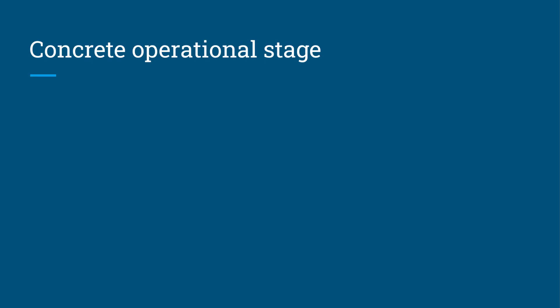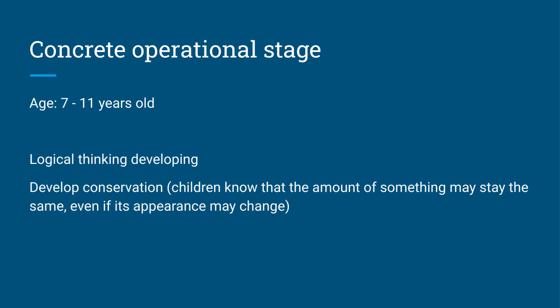The next stage is concrete operational stage. This is from the ages of seven to eleven. They're starting to really develop their logical thinking, and they're starting to develop conservation. They start to understand that the amount of something may stay the same even if appearance changes. That concept of conservation really starts to develop in these children. Even though something's appearance changes, they understand that the quantity of it remains the same.